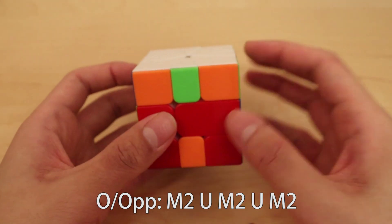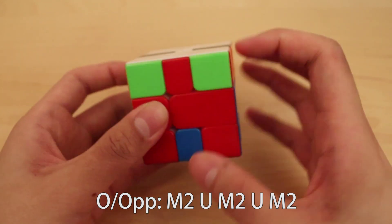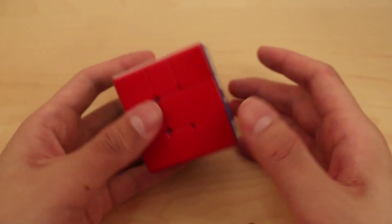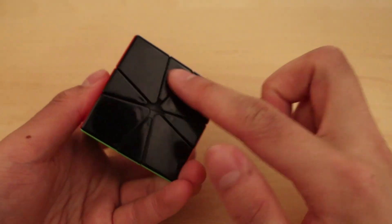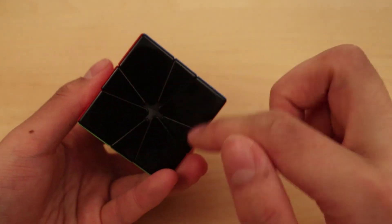Now if you go the opposite direction, that solves the case. M2, U, M2, U, M2. Again, you can do the same thing for the bottom for op-op and other O.